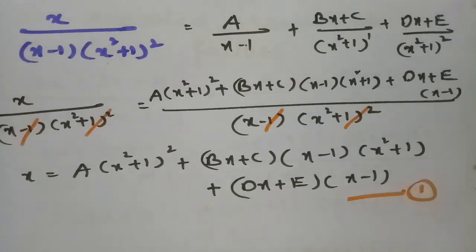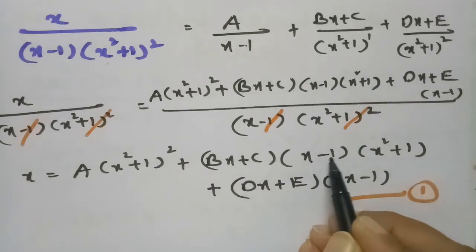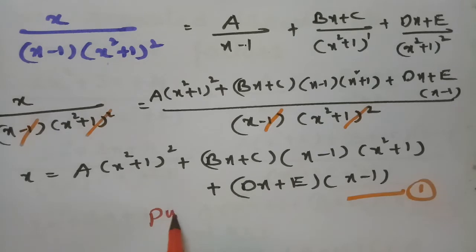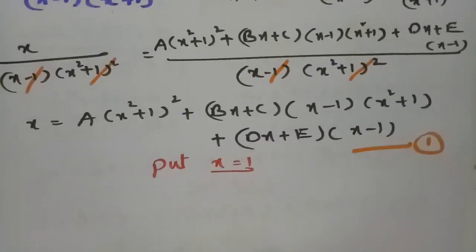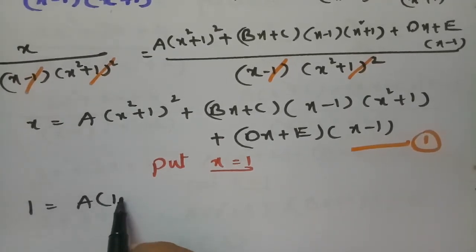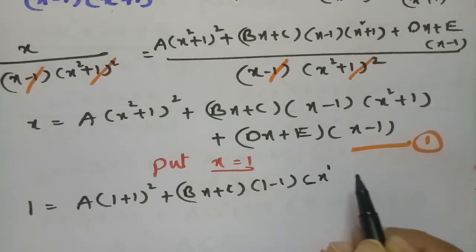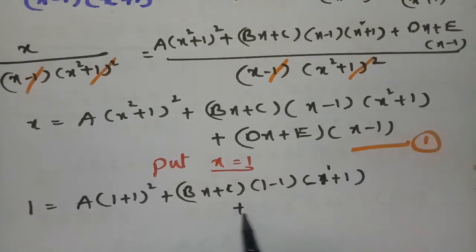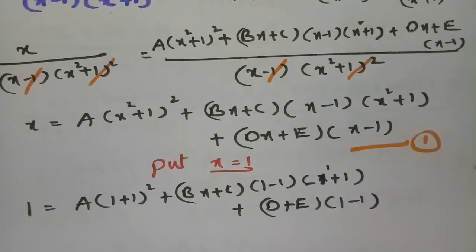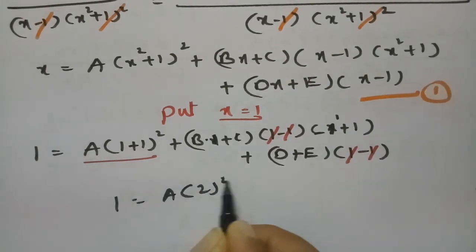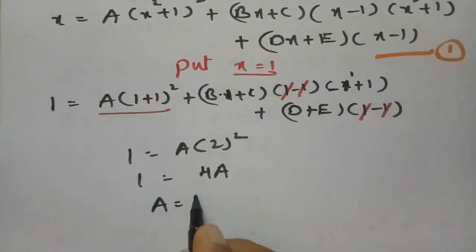To find A, substitute x = 1 so the second and third terms become zero. Then: 1 = A(1+1)² = A(2²) = 4A, giving A = 1/4.